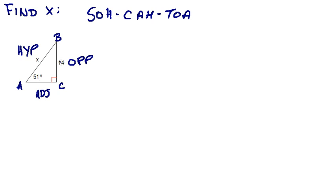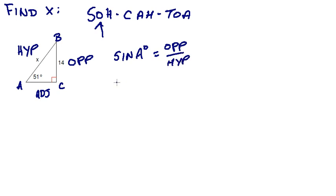So our trig ratio that we're using for opposite and hypotenuse will be sine. The sine of angle A is equal to our opposite over our hypotenuse. Filling in what we know: the sine of 51 degrees is equal to our opposite, which is 14, over X, which is our hypotenuse.